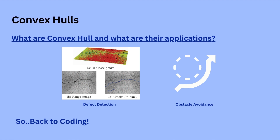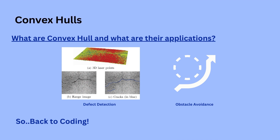Creating a 3D convex hull from point cloud data can be very useful in a variety of applications. For example, it can be used to represent the boundary of a physical object in 3D space, such as a building or a geological formation. It can also be used to perform collision detection in robotics or to detect defects in industrial parts.